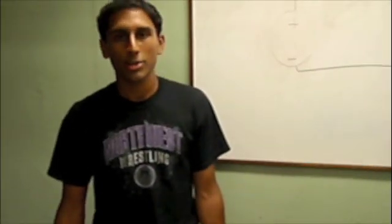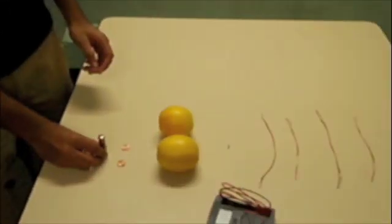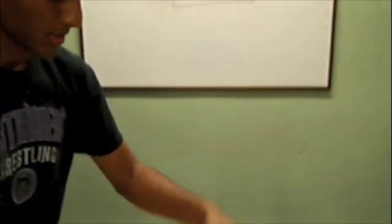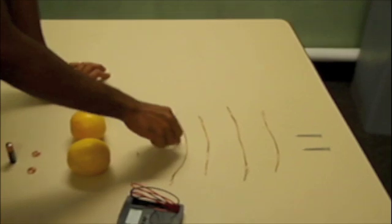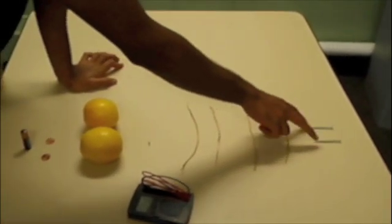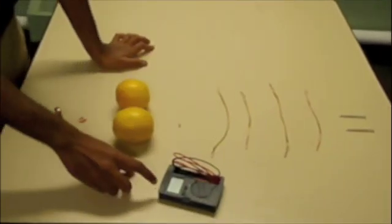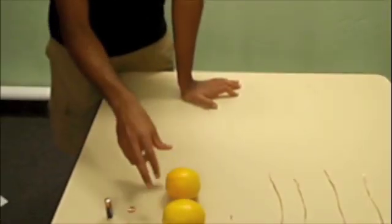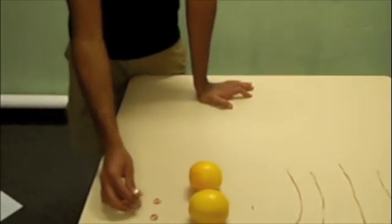Today we're going to show you an experiment using a double-A battery, two pennies, two lemons, a light which is 1.5 volts, a light bulb, four copper wires, two zinc nails, and a digital multimeter. We're going to show you how these two lemons will produce approximately the same voltage as a double-A battery.